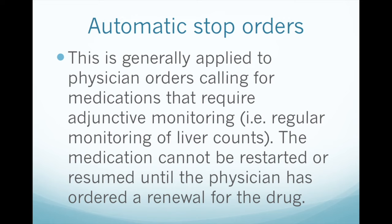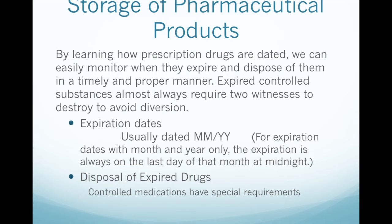Storage of pharmaceutical products. By learning how prescription drugs are dated, we can easily monitor when they expire and dispose of them in a timely and proper manner. Expired controlled substances almost always require two witnesses to destroy, to avoid diversion. Expiration dates are usually dated month/month year/year. For expiration dates with month and year only, the expiration is always on the last day of the month at midnight.